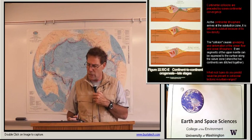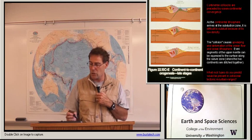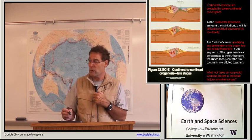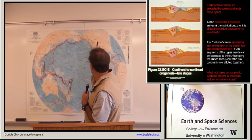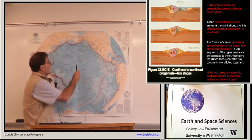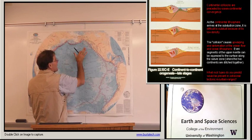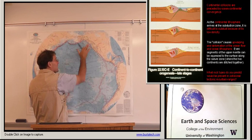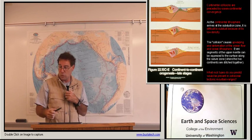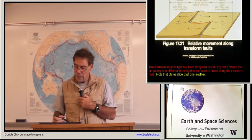There is a third type of convergent boundary — collisional tectonics — that we won't discuss in detail on these maps. Looking at Western North America, much of what you see in British Columbia, Washington, and Oregon in the interior was accreted to Western North America over the past 200 million years. So believe it or not, you did have collisional tectonics in your backyard.